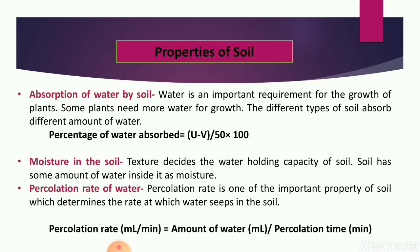Soil percolates rainwater, which gets collected above the bedrock. That level of groundwater is called the water table. Percolation rate means the speed at which percolation occurs — the amount of water percolated in the soil in a given time. Percolation rate can be calculated by the formula: amount of water (in ml) divided by percolation time (in minutes). The unit of percolation rate is ml per minute.